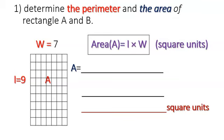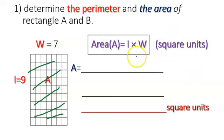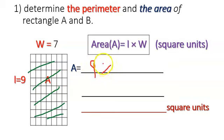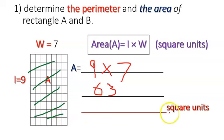The area means the space inside the rectangle. We always write down square units — when I find the answer it should be square units. So 9 times 7 equals 63. So the area is 63 square units.